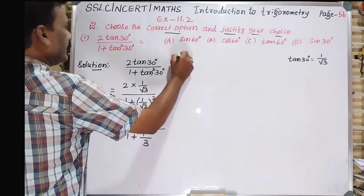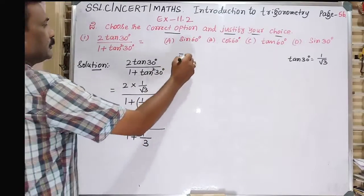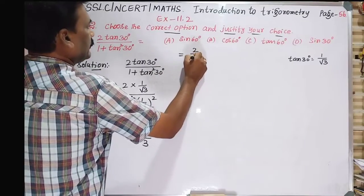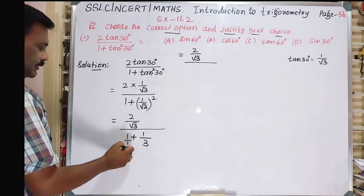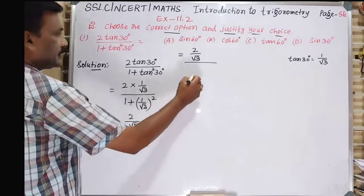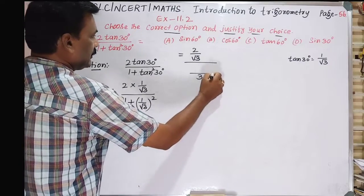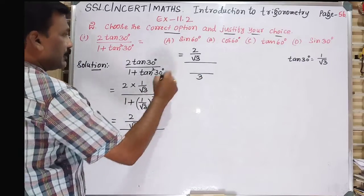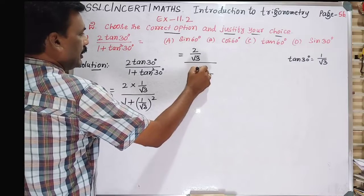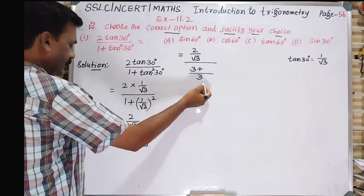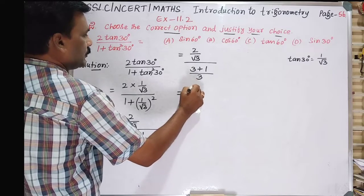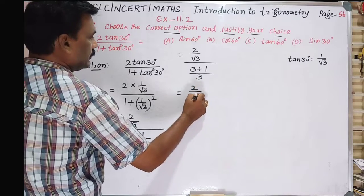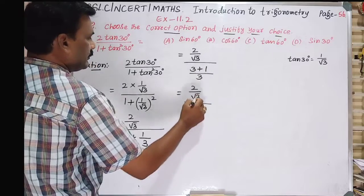So equals 2/√3 divided by, taking the LCM of 1 and 3, which is 3, so 1 times 3 is 3, plus 1 is 1, so 3 plus 1 equals 4. So equals 2/√3 divided by 4/3.